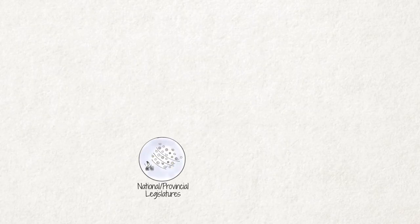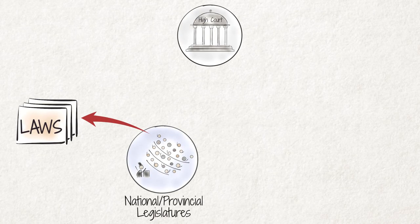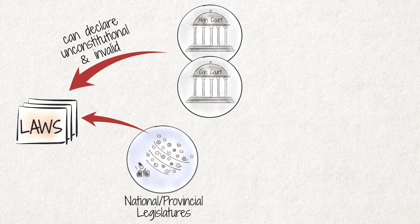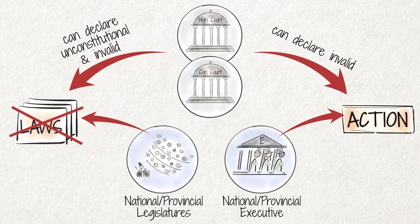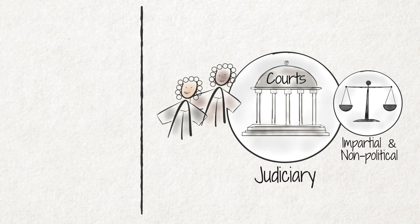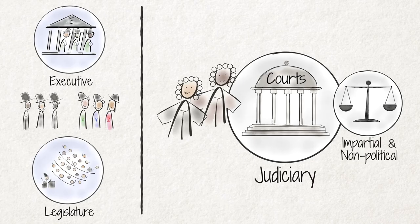For example, when the national or one of the provincial legislatures passes a law, a high court can declare the law or parts of it unconstitutional and invalid. If this is confirmed by the Constitutional Court, the law has no force and effect, as if it was never passed. The courts can similarly declare invalid the actions of the national or provincial executive. This is why the judiciary has to be impartial and non-political, while the other two branches of government are made up of politicians who work along the lines set out by their particular party.